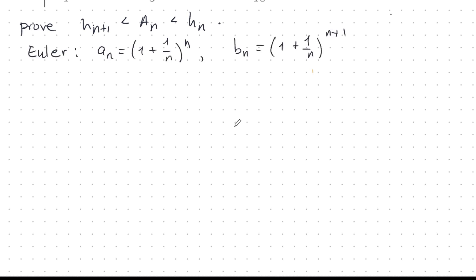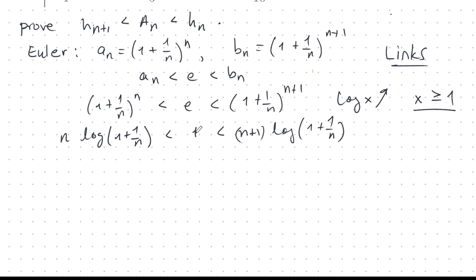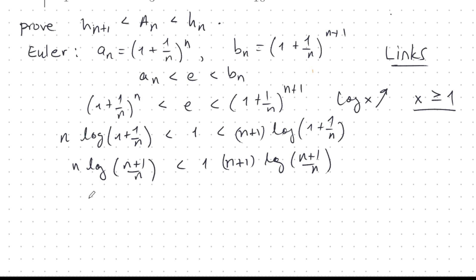Let me write down what we're trying to prove. Here are our two Euler sequences and the famous inequality, all shown in previous videos — links are in the description. I plug in the terms of the sequence. Now log X is monotone increasing over its entire domain, so we can apply log to all three terms and the inequality is preserved.